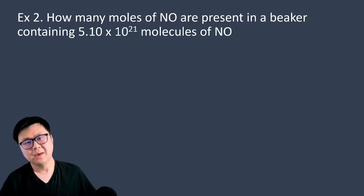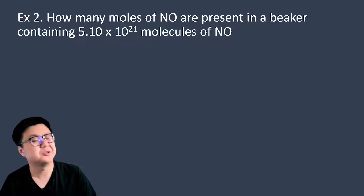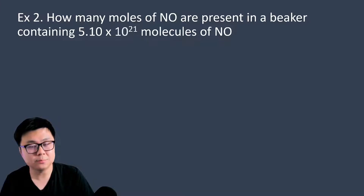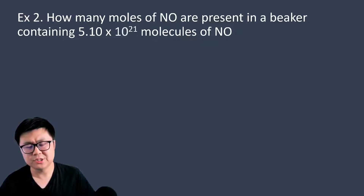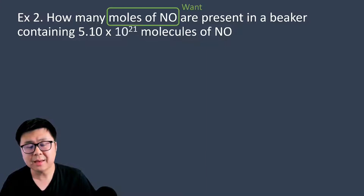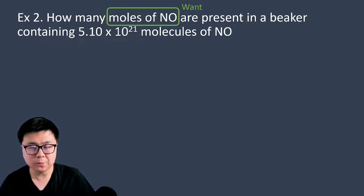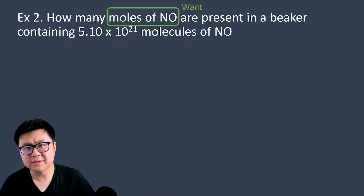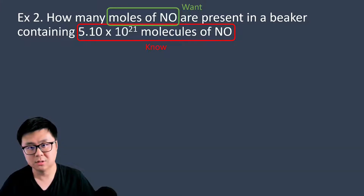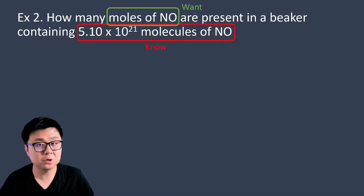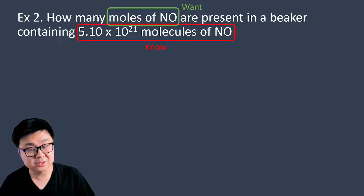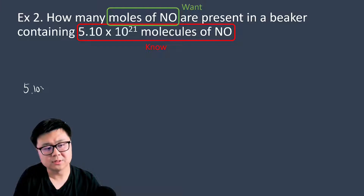Example two: how many moles of NO, or nitric oxide, are present in a beaker containing 5.10 times 10 to the power of 21 molecules of NO? What do they want? Moles of NO. What do we know? 5.10 × 10²¹ molecules of NO. We're going from molecules of NO to moles of NO. Pause and try it yourself before continuing.